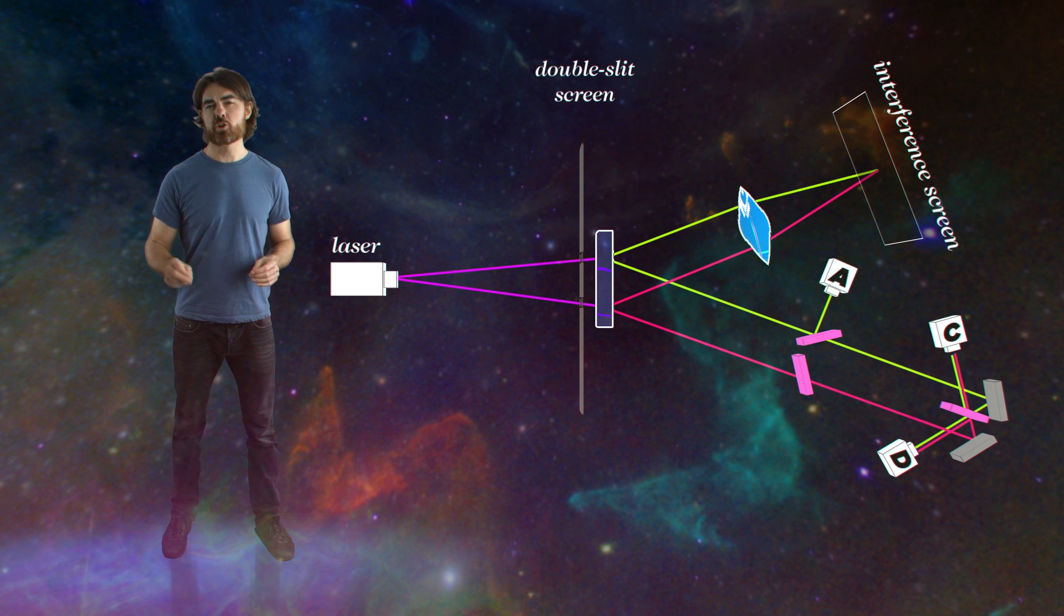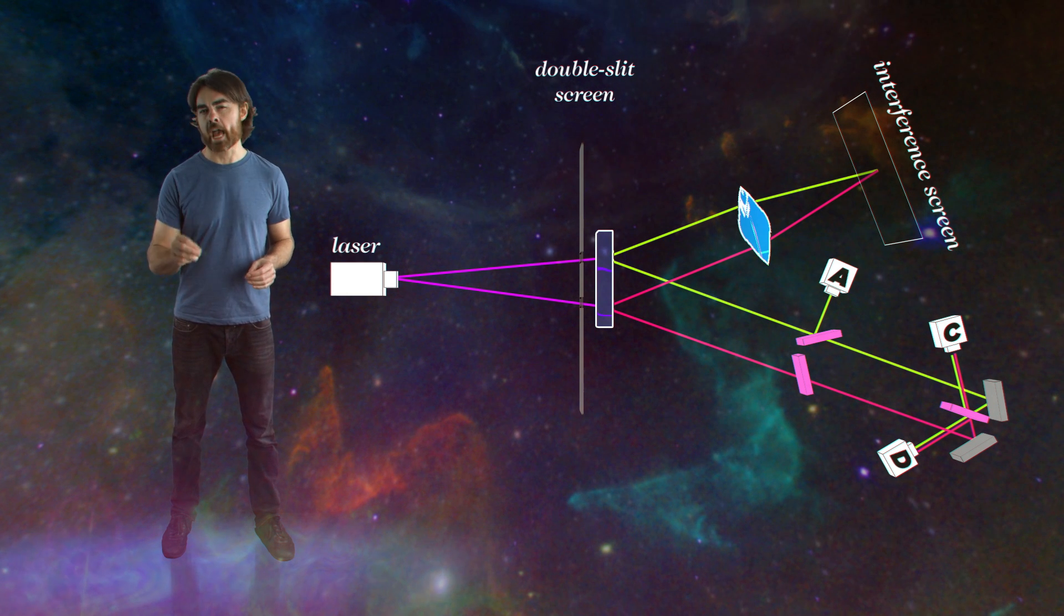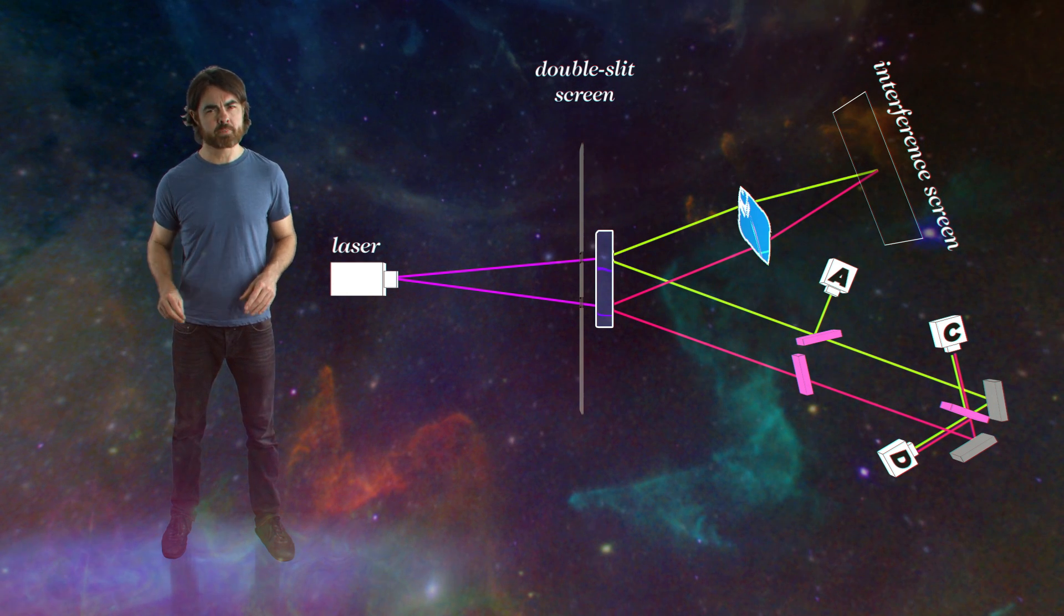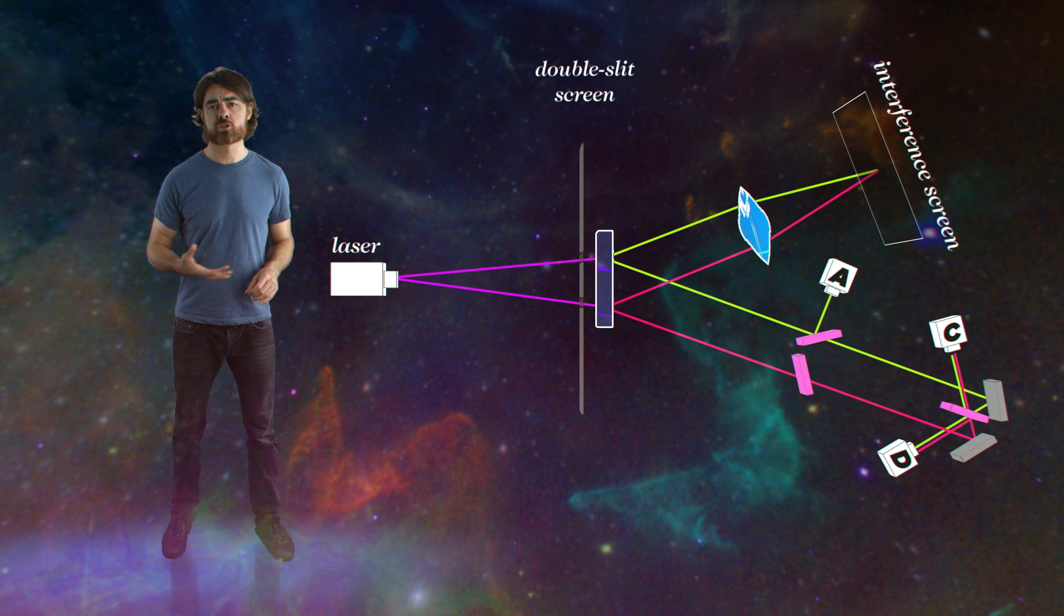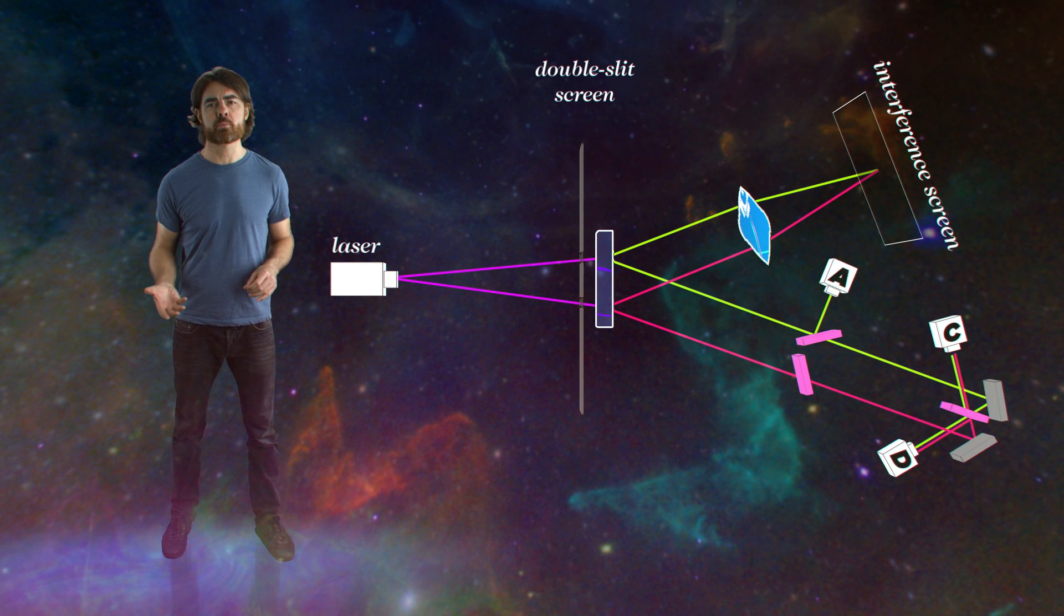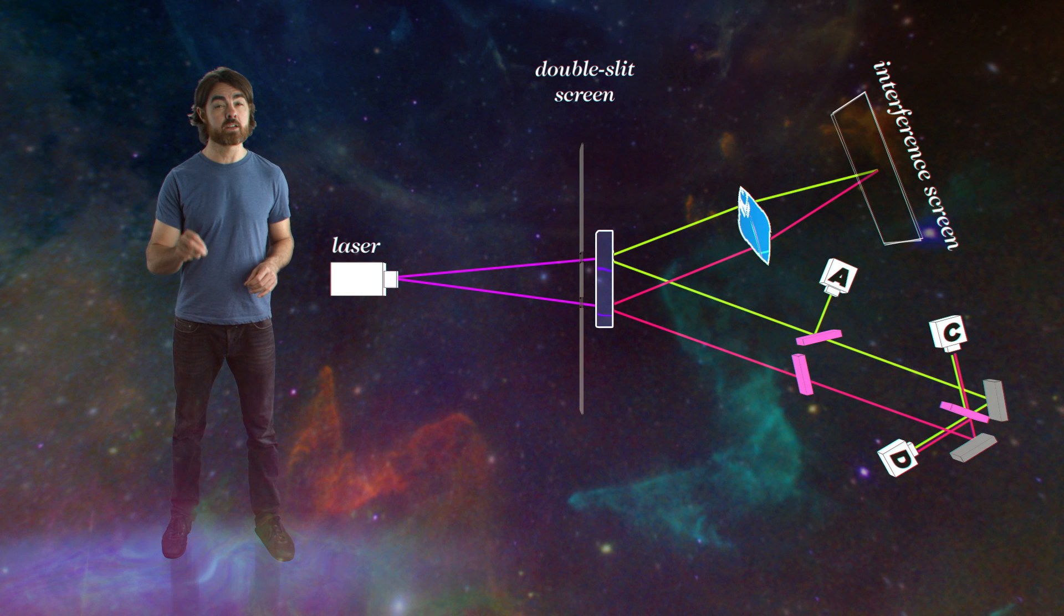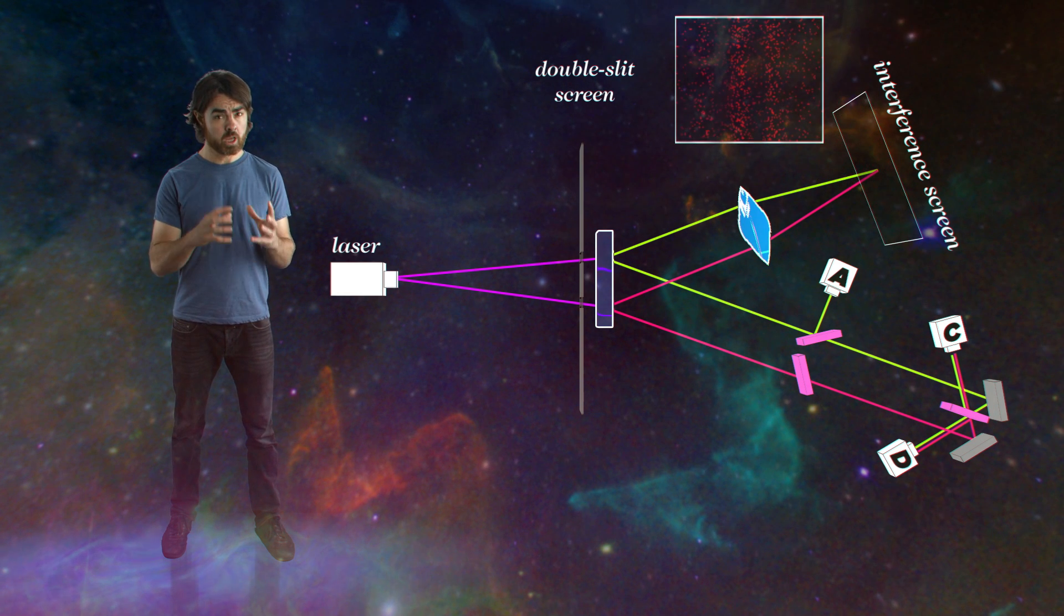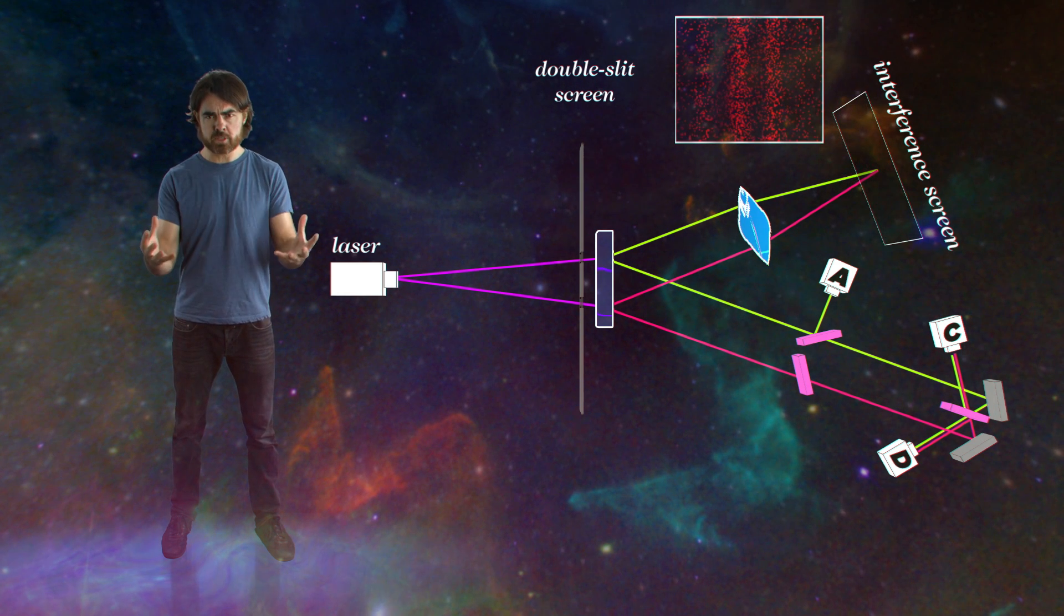And the result is that photons whose entangled twins land at A produce no interference pattern. They just land in a single pile as though they had traveled as particles through the entire experiment. But photons landing at C or D have twins that do produce an interference pattern at the screen.